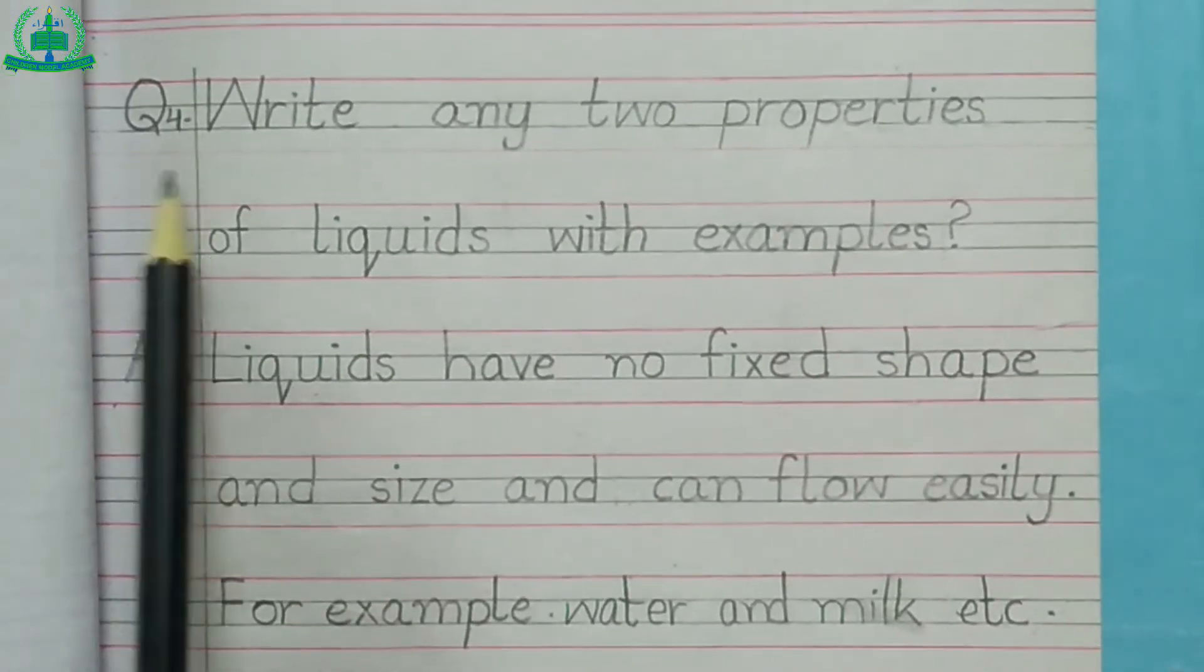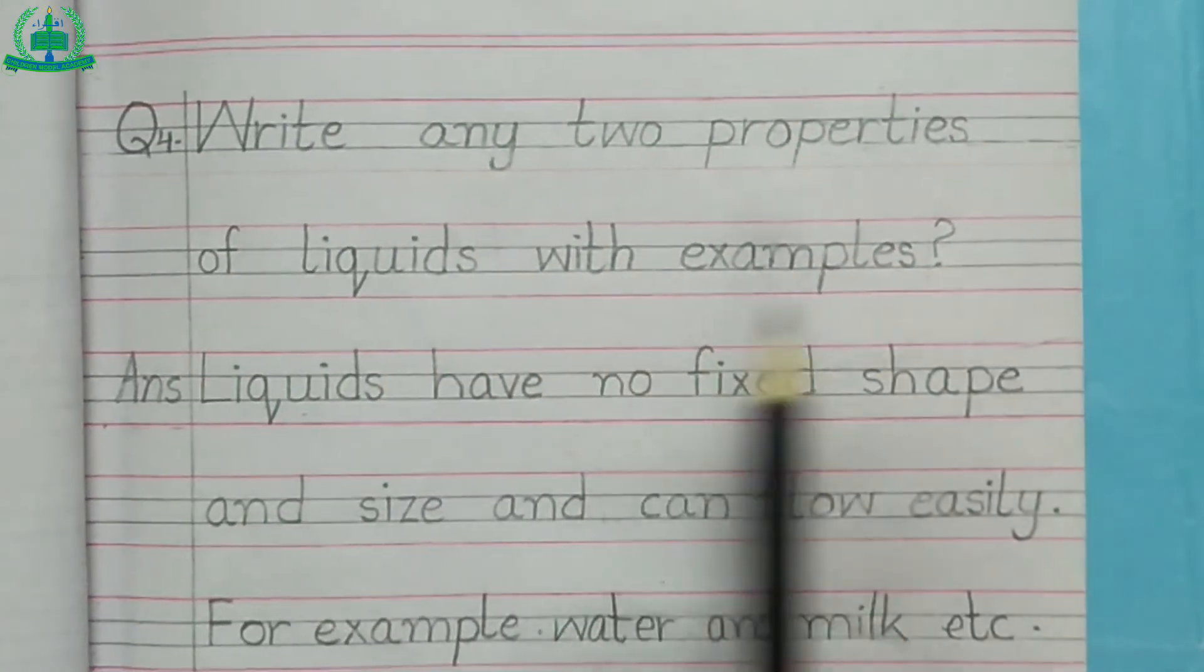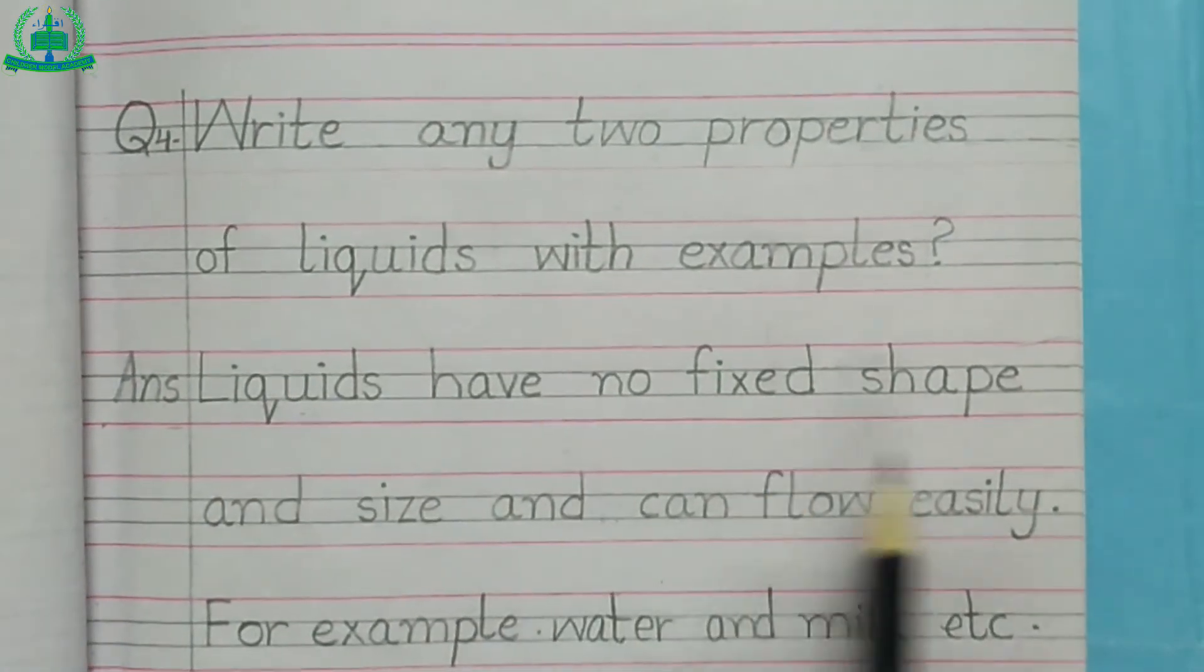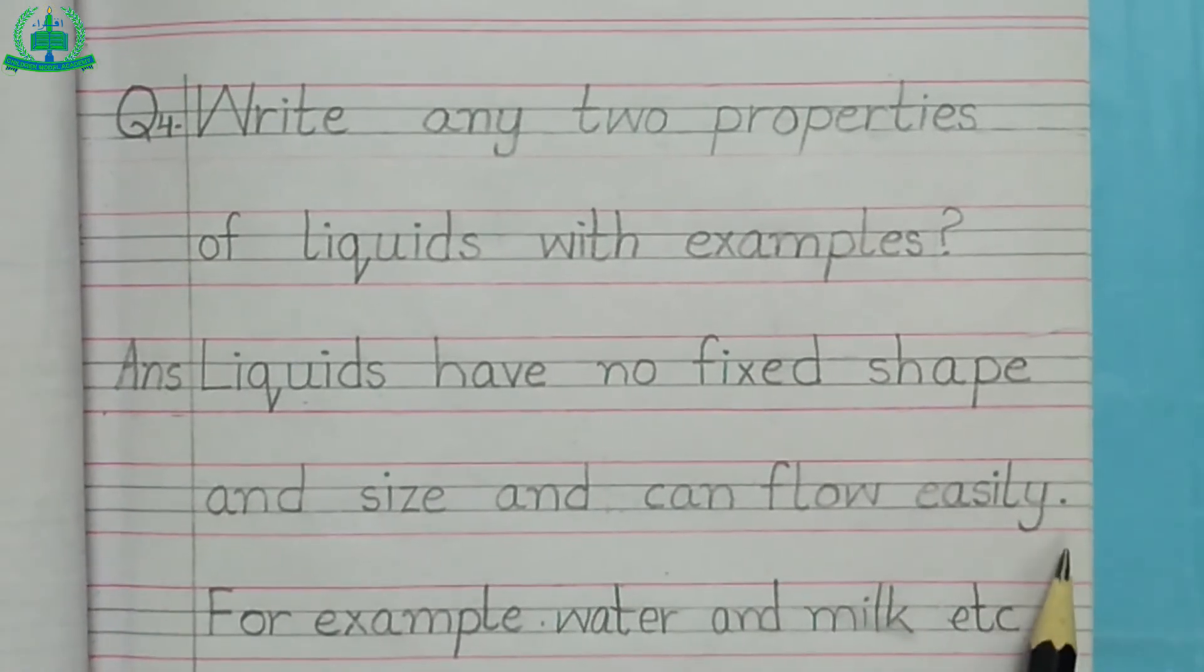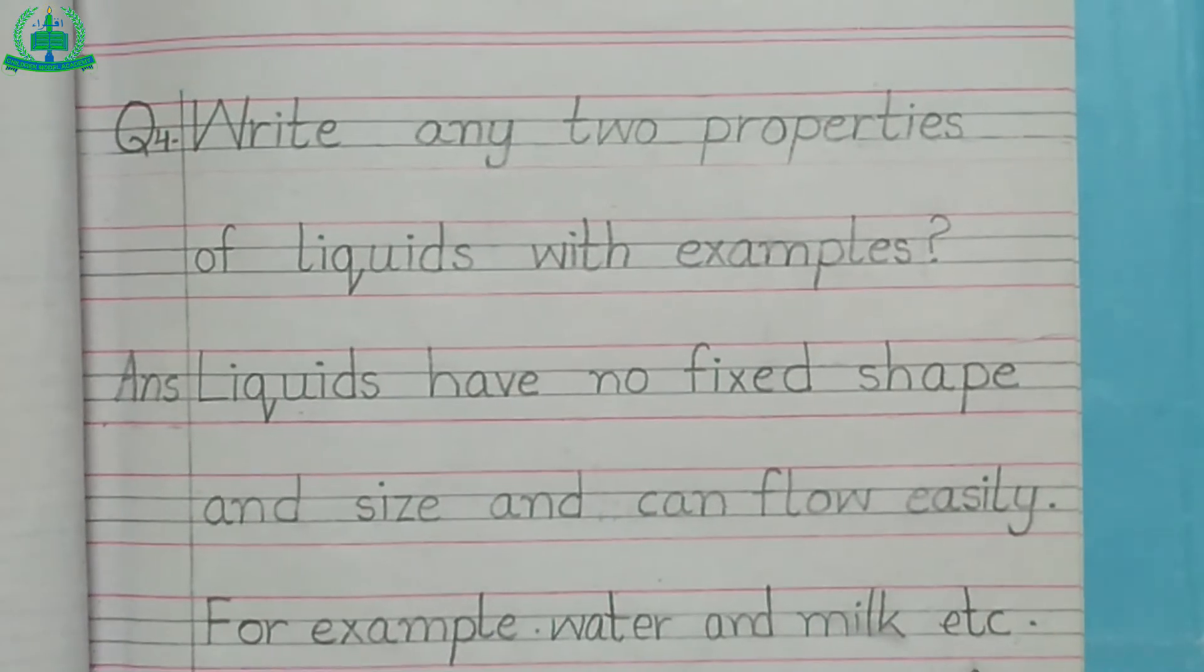Question number 4: Write any two properties of liquids with examples? Answer. Liquids have no fixed shape and size and can flow easily. For example, water and milk etc.